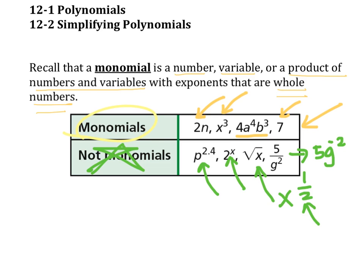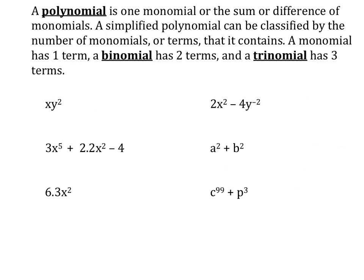Monomials — that's what we're talking about. A polynomial is one monomial or the sum or difference of monomials. That means we're adding monomials together or subtracting monomials from each other. A simplified polynomial can be classified by the number of monomials or terms that it contains.